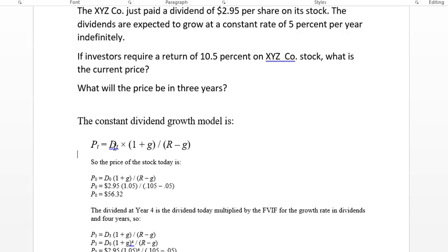Then we have the dividend which is D sub T for time, multiplied by 1 plus G which is the growth rate. And then we're going to divide that by R which is the rate that we are needing, which is the 10.5% required return, minus the growth rate.